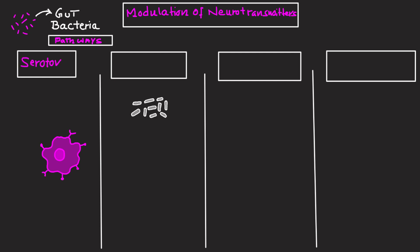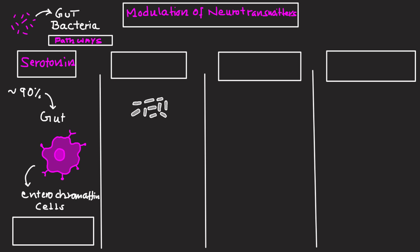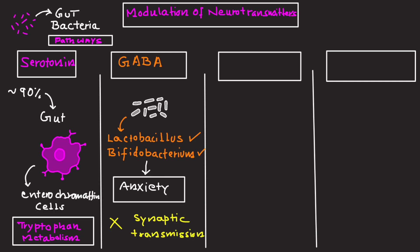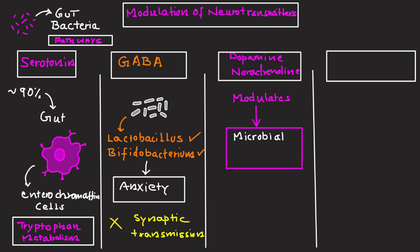Gut bacteria influence CNS neurotransmitter homeostasis through multiple pathways. First, serotonin — 90% is synthesized in the gut by enterochromaffin cells, influenced by microbial tryptophan metabolism. Second, GABA — produced by Lactobacillus and Bifidobacterium strains, modulates anxiety and inhibitory synaptic transmission. Dopamine and noradrenaline are modulated indirectly via microbial metabolism of precursors like tyrosine.